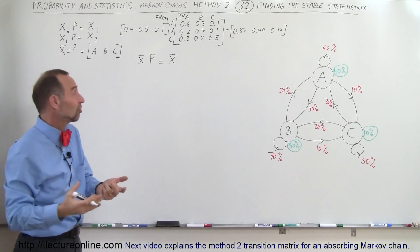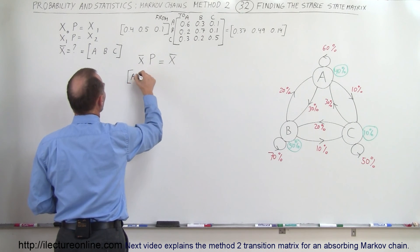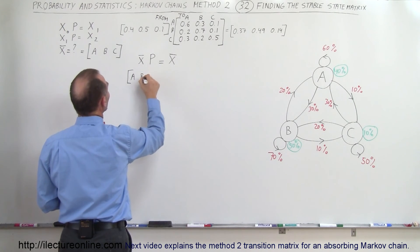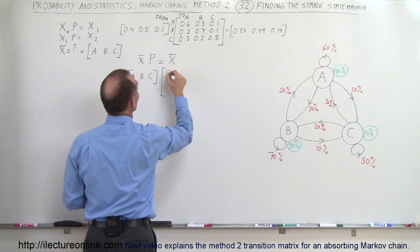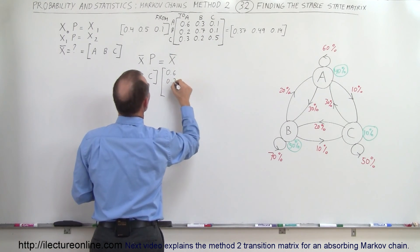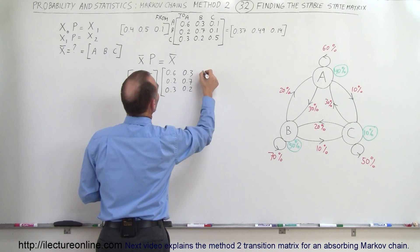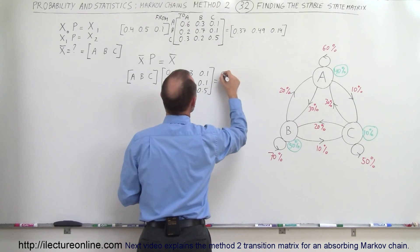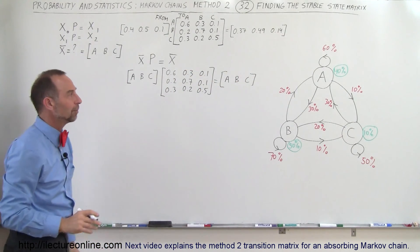Since we don't know what it is, let's call the elements A, B and C. Here's the stable state matrix multiplied times the transition matrix: 0.6, 0.3, 0.1 in the first column; 0.2, 0.7, 0.1 in the second; and 0.3, 0.2, 0.5 in the third. That multiplication should give us back the stable state matrix A, B and C, because it should no longer change after we reach the stable matrix.